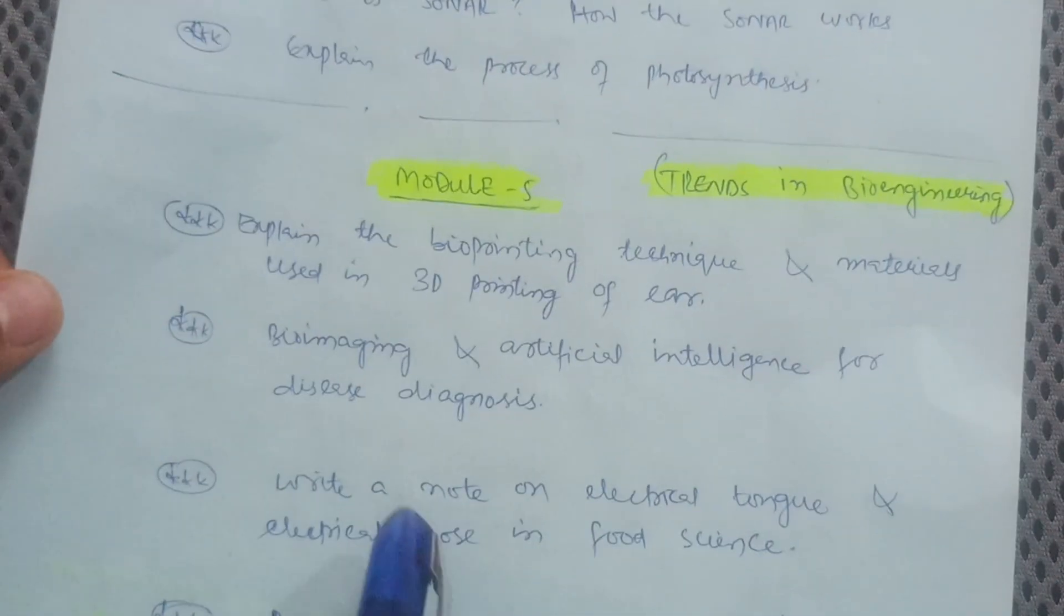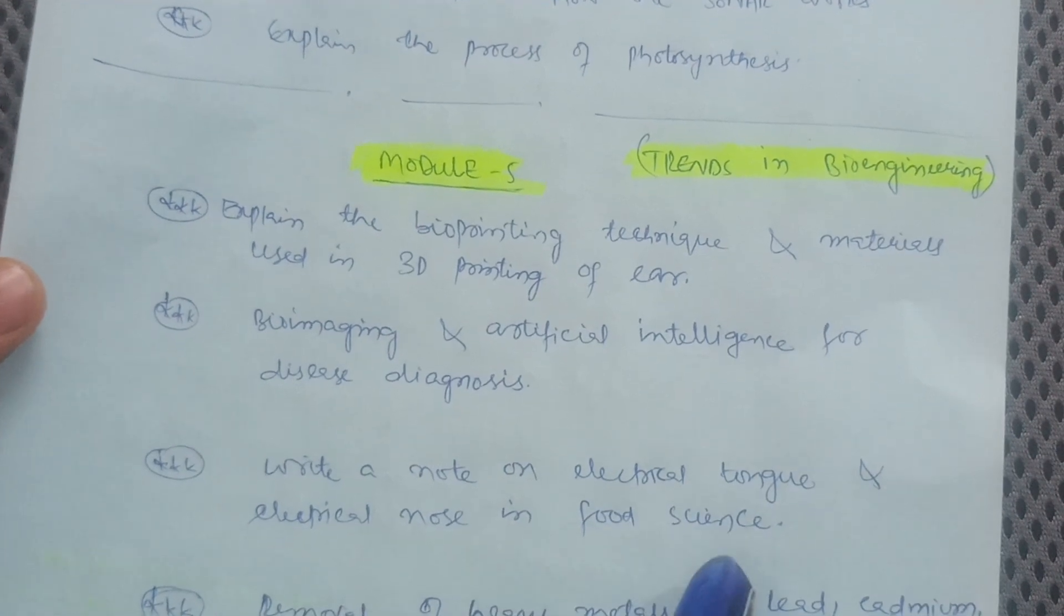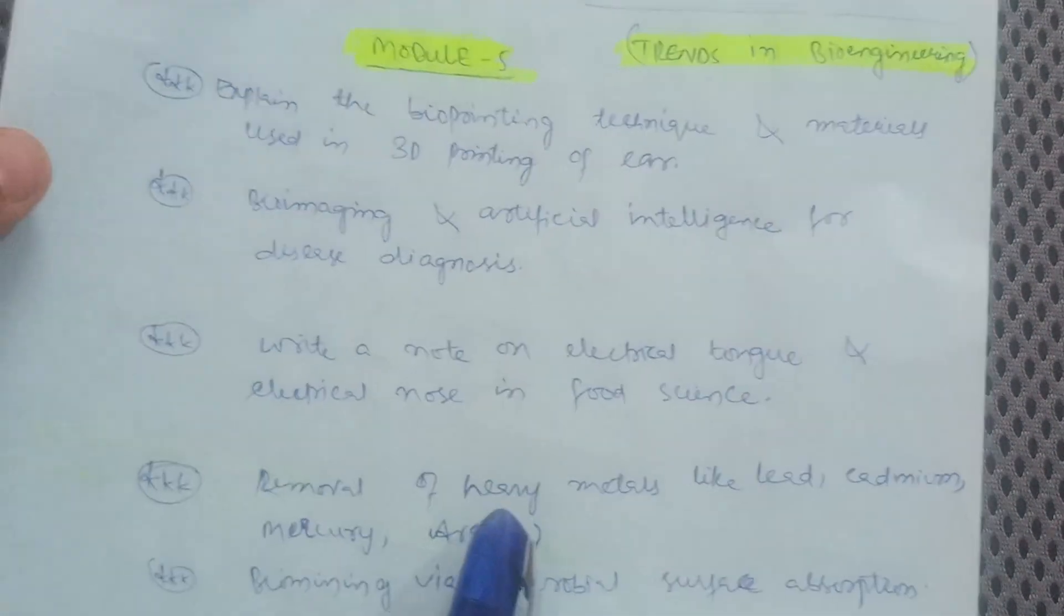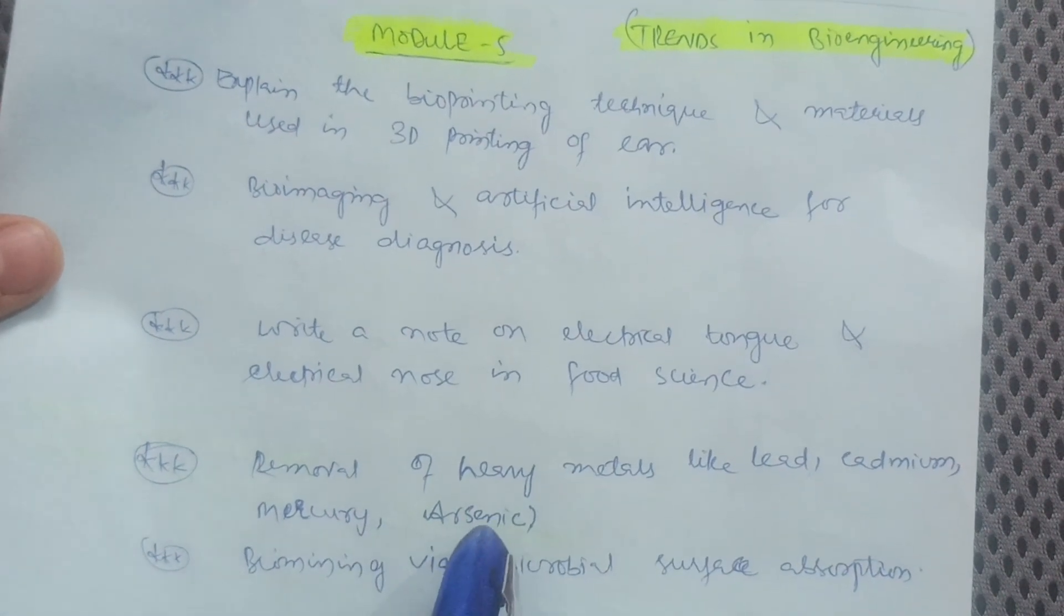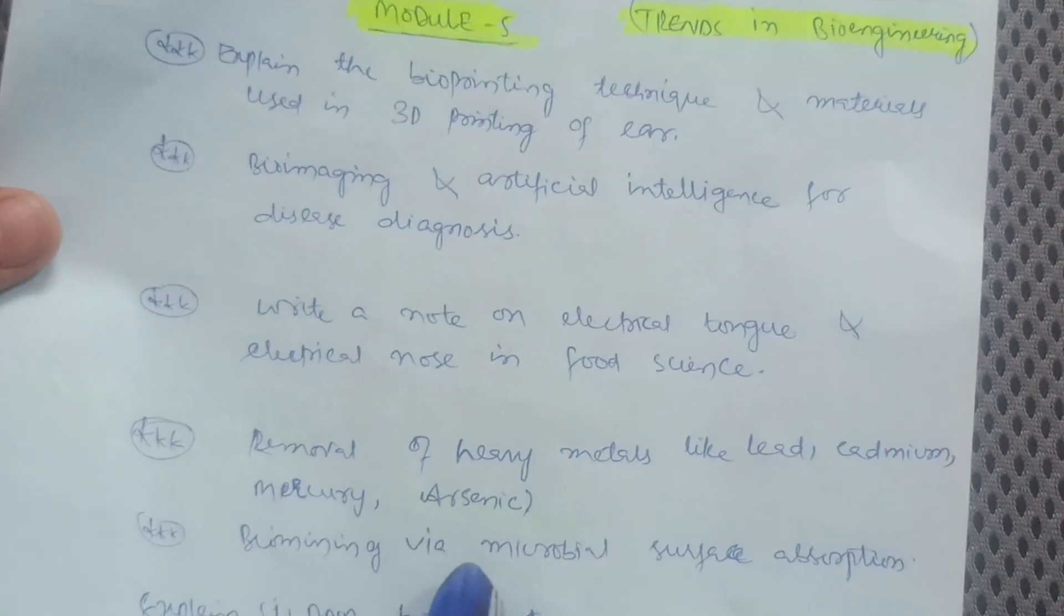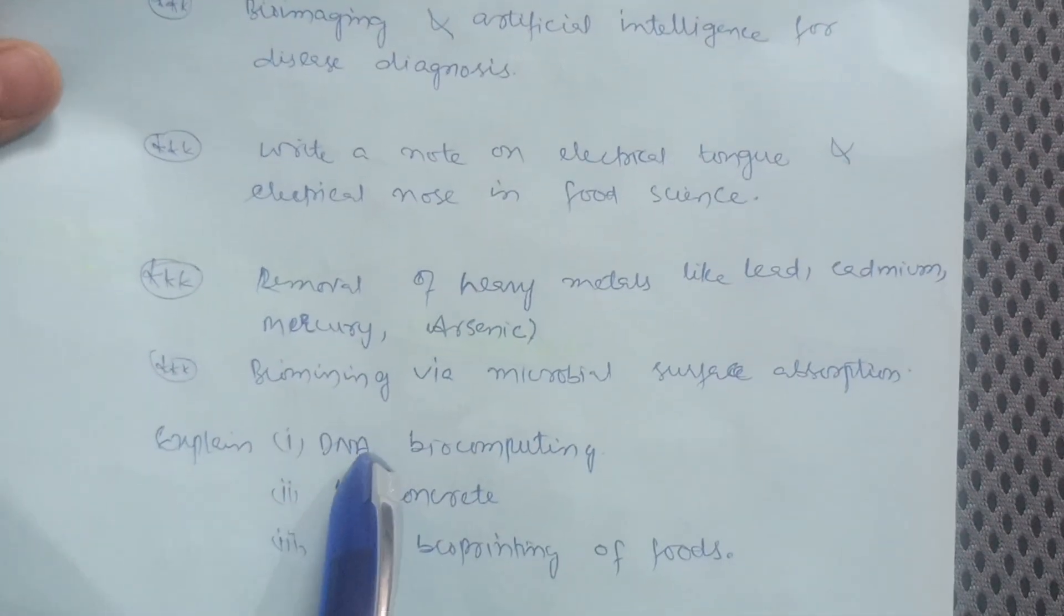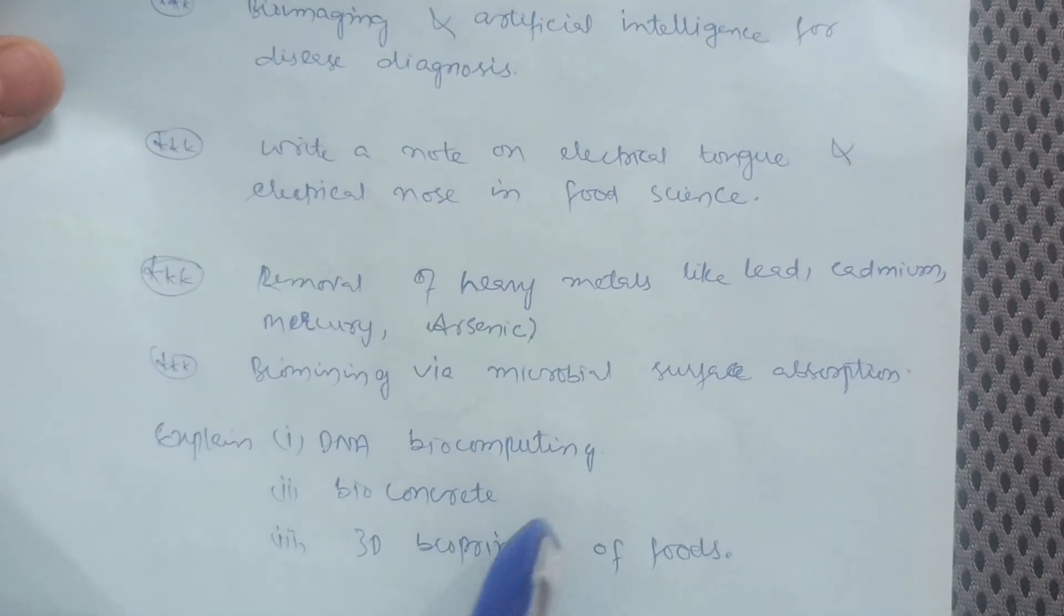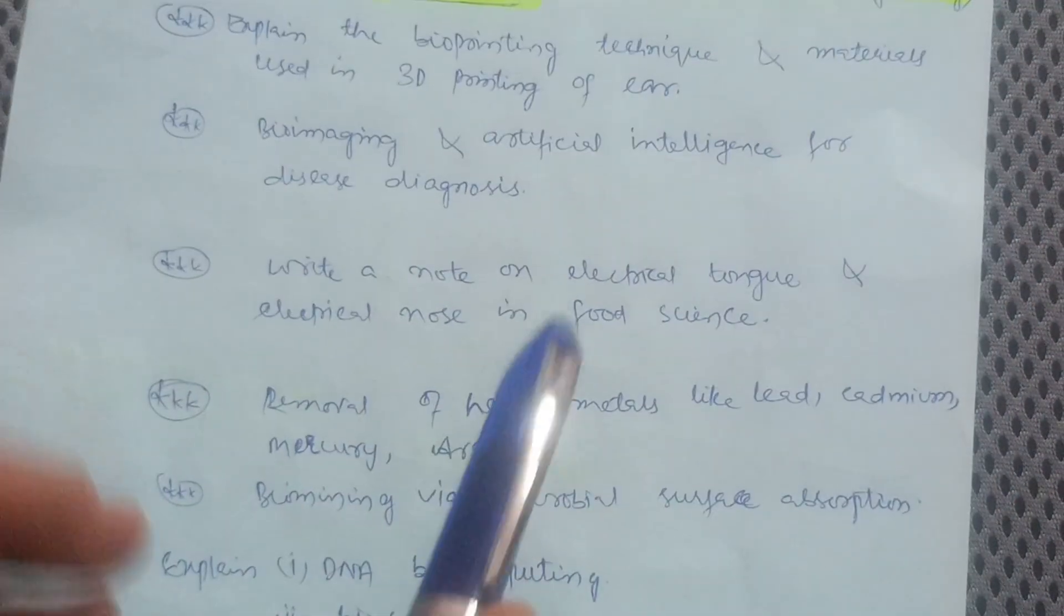Write a note on electrical tongue and electrical nose in food science. Next one is removal of heavy metals like lead, cadmium, mercury, arsenic. Next one is bio mining via microbial surface absorption. And explain some DNA biocomputing, bioconcrete, and 3D bioprinting of foods.